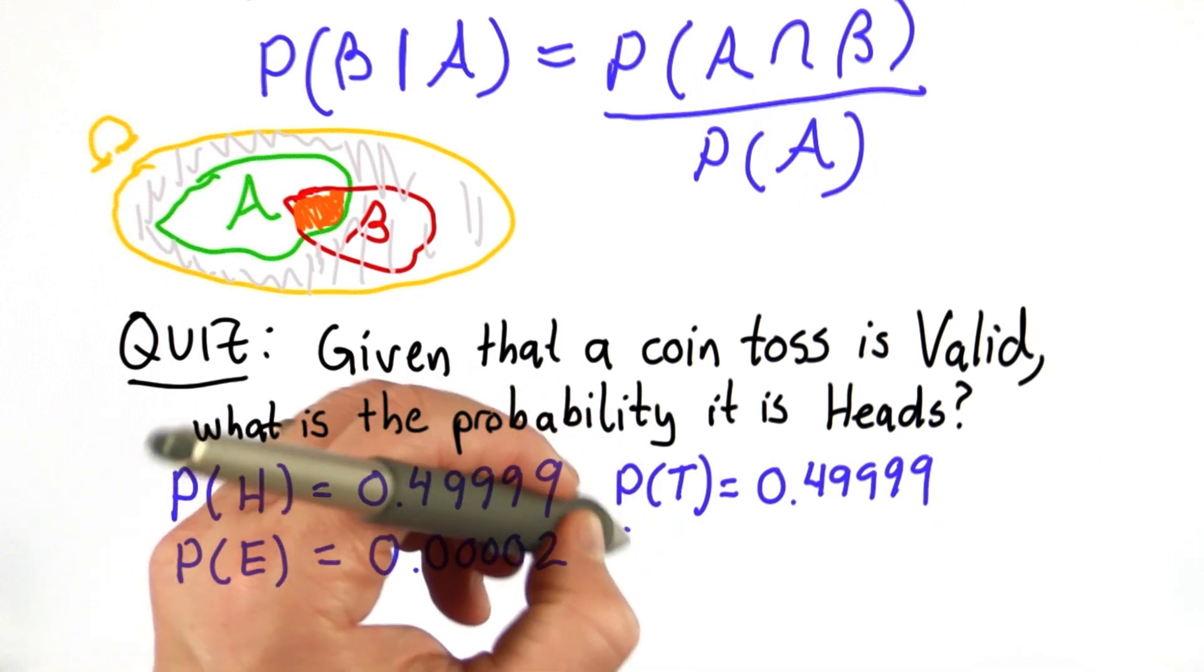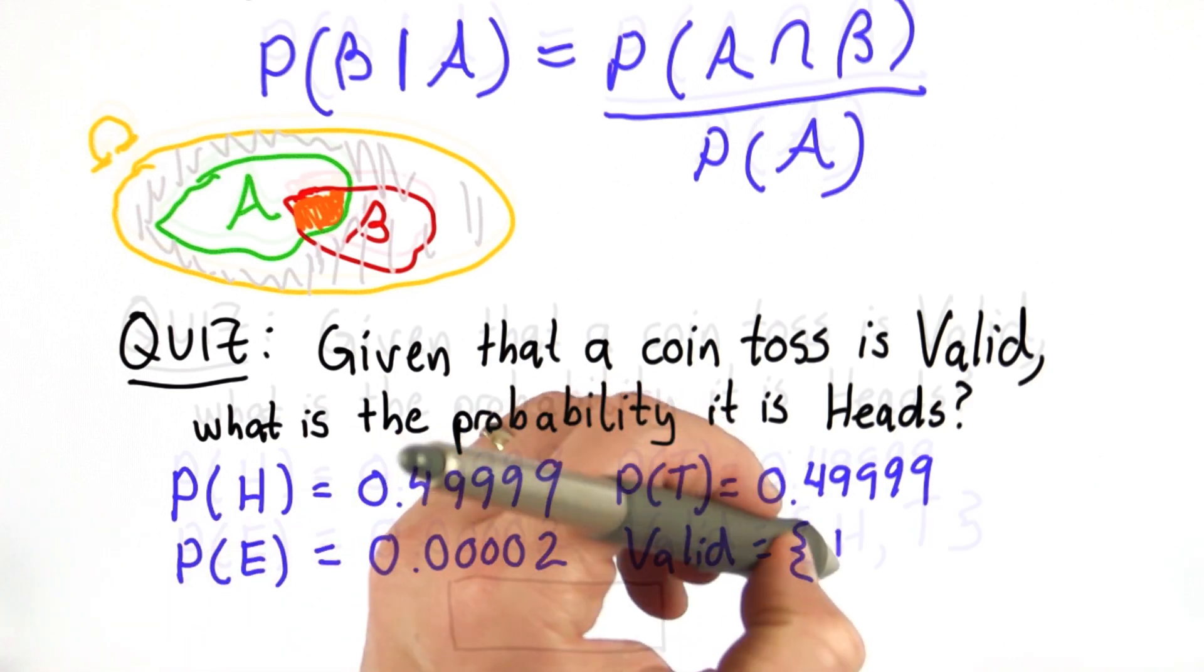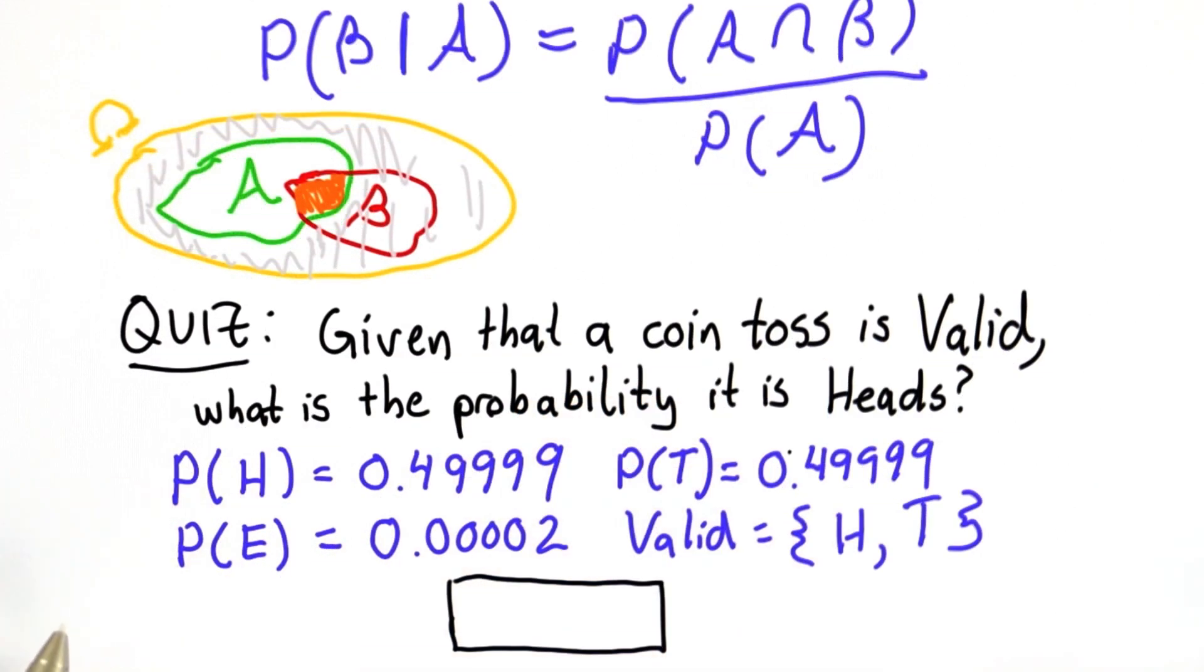We define valid as the outcomes where it lands on heads or tails, not on the edge. Given that you know a coin toss is valid, what's the probability that the outcome is heads?